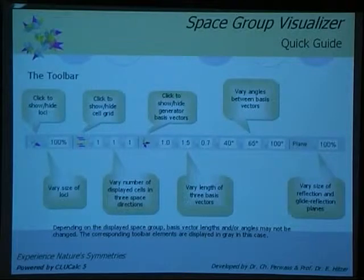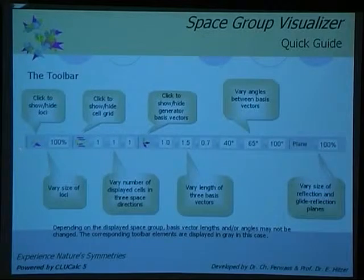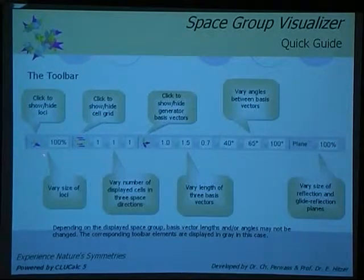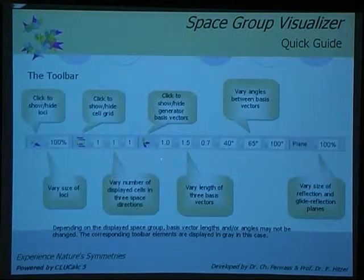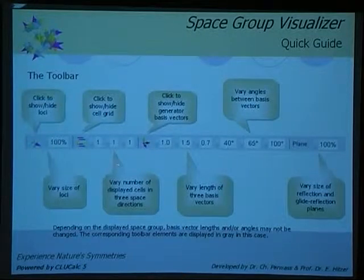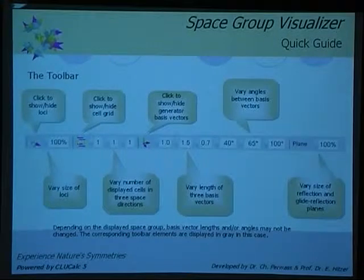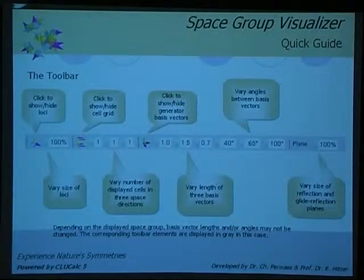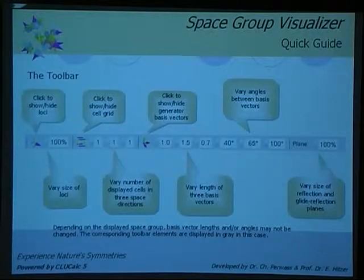You can show these atomic symbols, the general positions or not. You can vary the size. You can show the lattice or not. You can increase the lattice size from one cell to up to five cells in every direction. You can click on and off this triplet of vectors, change their lengths and angles. When you have reflection planes, they may cover the whole view, so you can shrink them to look between the reflection planes.